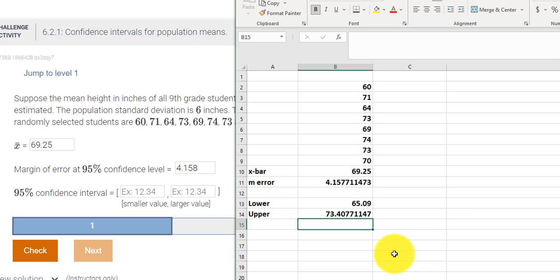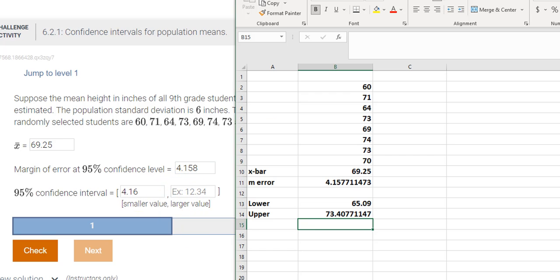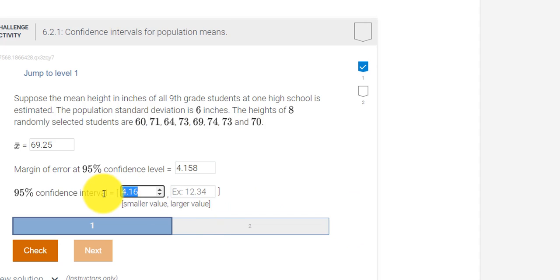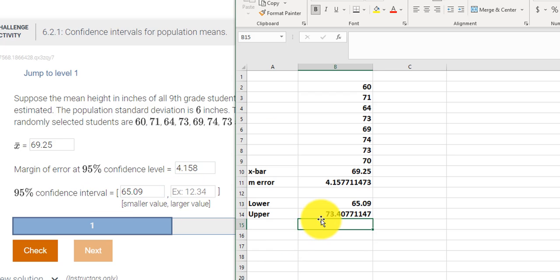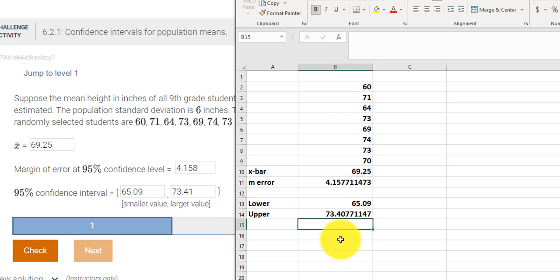Press enter. So those are my upper and lower limits. Let's enter the lower limit first. It looks like they go two decimal places. So 4.16. I think I made a mistake. Yeah, I did. The lower limit should be 65.09. And then the upper limit was 73.41.